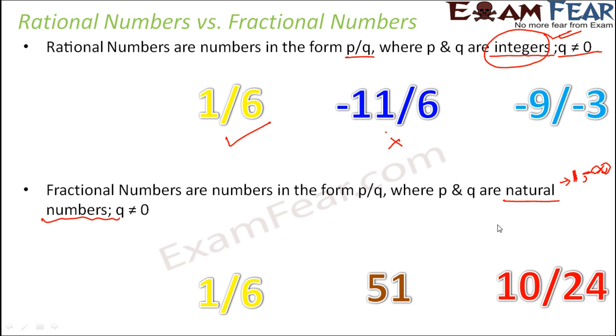We know that all natural numbers are integers. Therefore, all fractional numbers are rational numbers, but all rational numbers are not fractional numbers. Like you see here, one by six is a rational number and also a fractional number. But minus eleven by six is a rational number but not a fractional number. Similarly, the examples given for fractional numbers are also rational numbers.